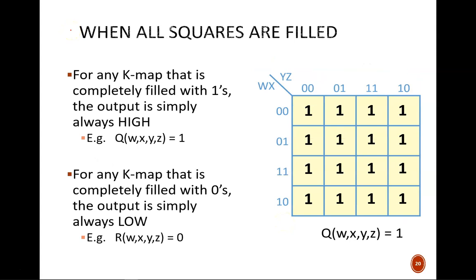Shifting gears, let's talk about a unique case. What happens when all the squares of a map are filled in? Well, that represents the simplest possible logic equation. If all the squares are ones, then it does not matter what the inputs are. The output is always true. So the function would simply be the output variable equals 1. Similarly, if all the squares were blank or zeros, the function would be the output variable equals zero.